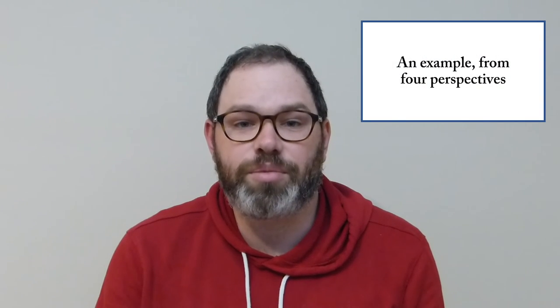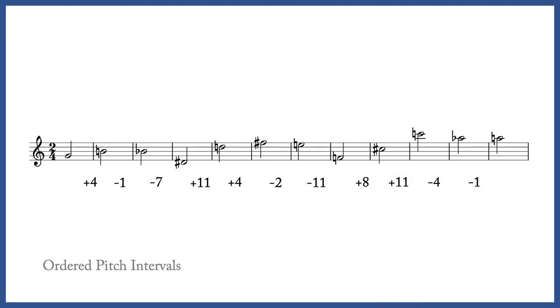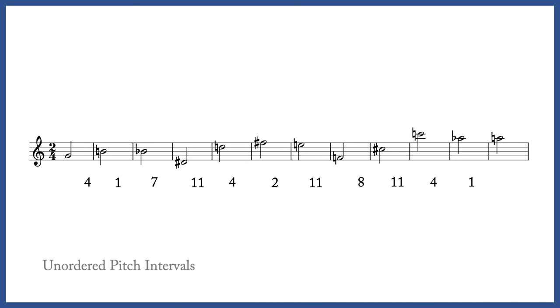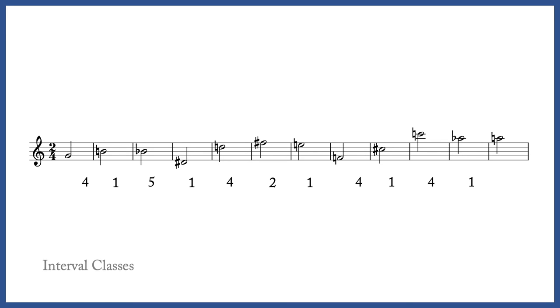Here's a realization of a 12-tone row written by Anton Webern that will demonstrate the four different approaches to intervals we might use when analyzing non-tonal music. The ordered pitch intervals show quite a disparity — the melody is disjunct and presents quite a variety of intervals. When we strip away the direction, we start to see some similarity across the melody. Things get really interesting when we look at it from the perspective of pitch class intervals. When we look at the interval classes between each pitch, we can see a pattern: each group of three notes includes the interval classes 4 and 1 in some order.